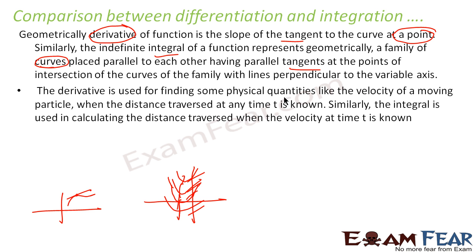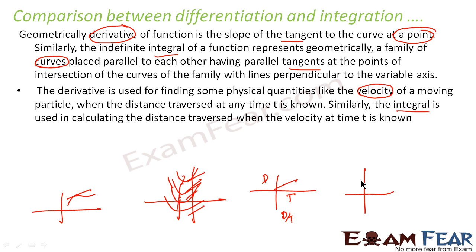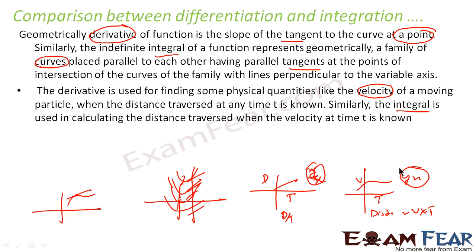In terms of applications, the derivative is used for finding quantities like velocity of a moving particle from a distance-time graph — derivative of distance with respect to time gives velocity. The integral is used to find distance traveled when the velocity-time relationship is known, since distance equals v times t. So when you are dividing two quantities, you use differentiation; when you are multiplying, you use integration. Both differentiation and integration also involve the concept of limits.